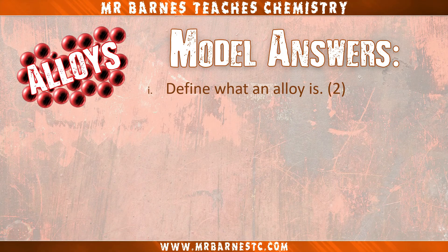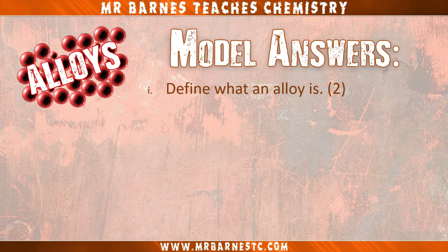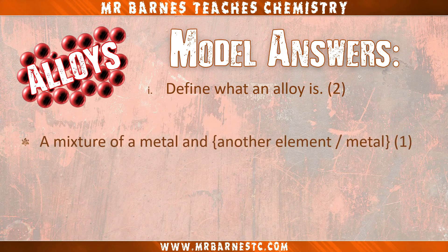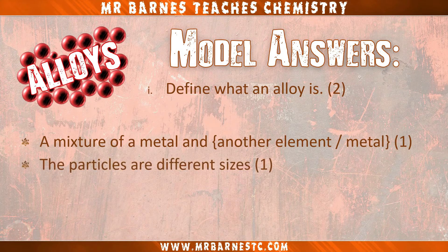Let's see how you've done. Part one: define what an alloy is. The first mark is for saying that it's a mixture of a metal and either another element or another metal. You must say a mixture, however — if you said a compound you would lose all marks for this question. The second mark is for saying that the particles are different sizes.